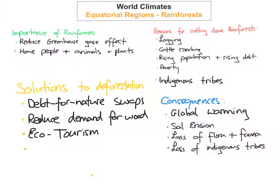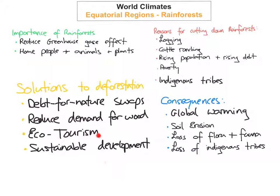The fourth solution is sustainable development. This would ensure that if popular trees like mahogany are chopped down, two or three more are planted in their place, so there will always be the same amount of trees or even more in the future. The only problem is that sustainable development could be very expensive for the developing world, as they would have to plant trees after cutting them down, which could be quite costly to maintain.